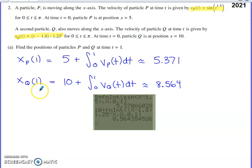We do basically the exact same calculation for particle Q. We have a different initial position. We have a different velocity function that we're going to be using for our integral. But this should be the position of particle P at time one and the position of particle Q at time one.